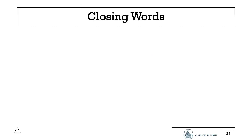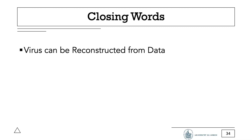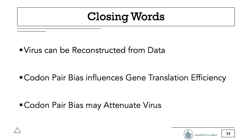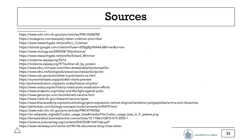And this concludes my presentation. The only thing left is the take-home message. We have seen that live virus can be reconstructed from digital genome data, even without live cells. The codon pair bias of genes can be modified to accelerate or decelerate their translation into protein. Codon pair attenuation influences the replication and translation of virus in cell culture and mouse model, and may be used to immunize against the wild-type virus. That has been my presentation, and here are my sources. Thank you for listening.